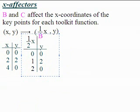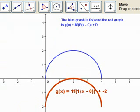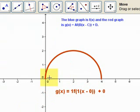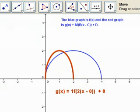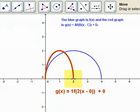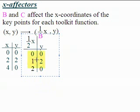Let me demonstrate. With D back to 0 and the red and blue graphs the same, I allow B to be 2. Instead of making the graph wider, it takes the X values and cuts them in half. So (4, 0) becomes (2, 0) and (2, 2) becomes (1, 2). The rule is: multiply X values by 1 over B. So if B is 2, you multiply by one half.